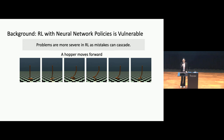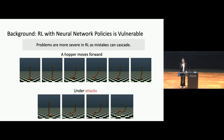Here is one example where a reinforcement learning controller needs to control a hopper and try to move it forward stably. We can see that in the normal case the hopper can move smoothly. However, if we add attacks onto the input of the reinforcement learning controller slightly, the hopper fails to move forward and falls down. What we really want is that even under this kind of attack, the hopper can still maintain a stable pace to move forward and never falls down. We call this process defense.